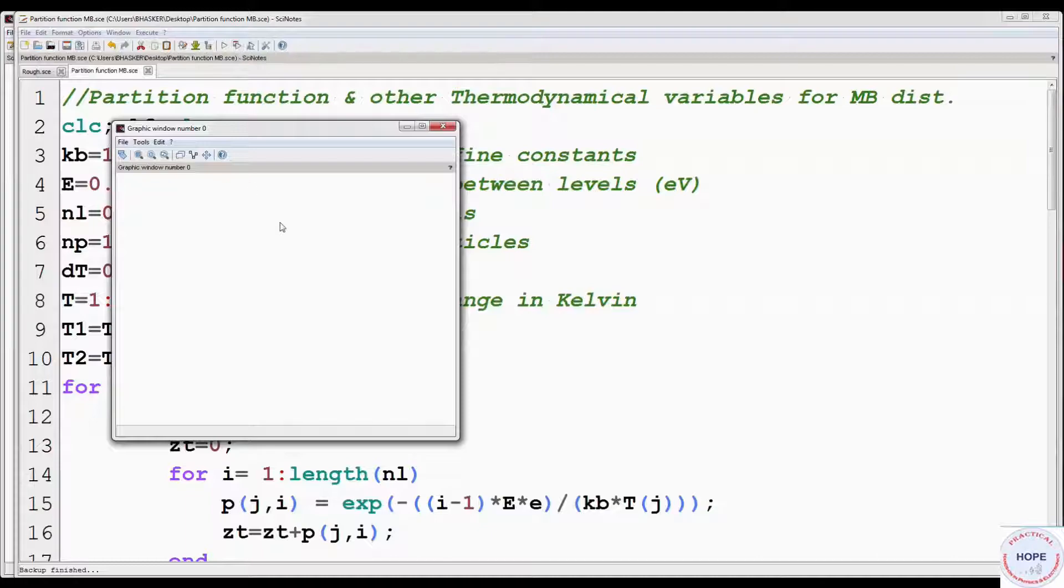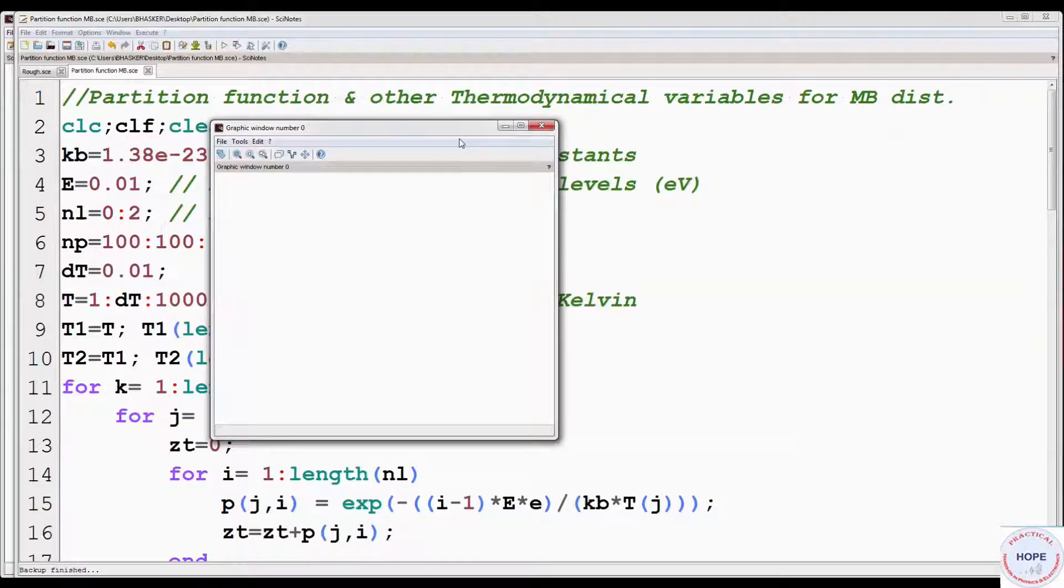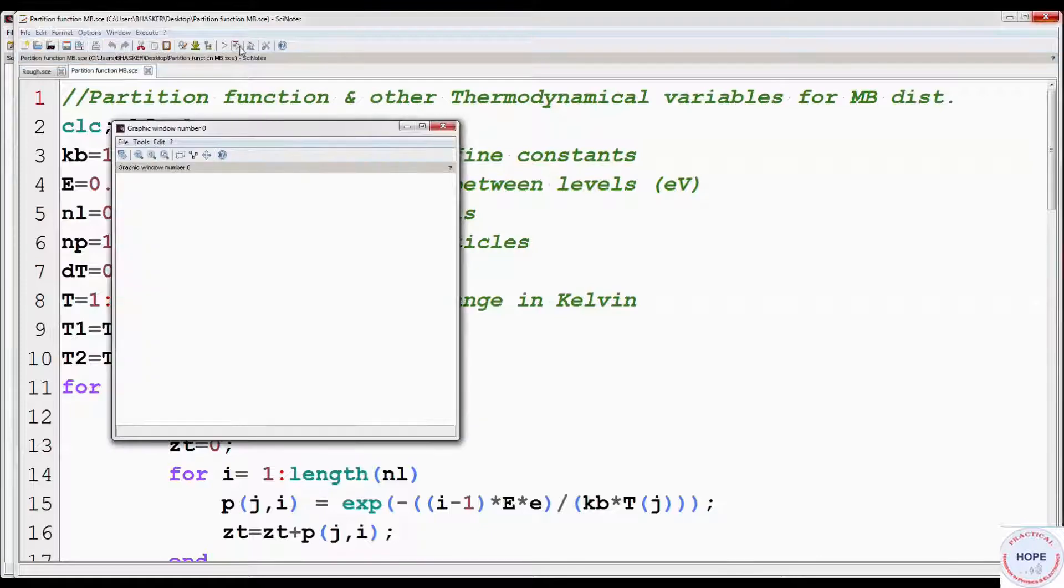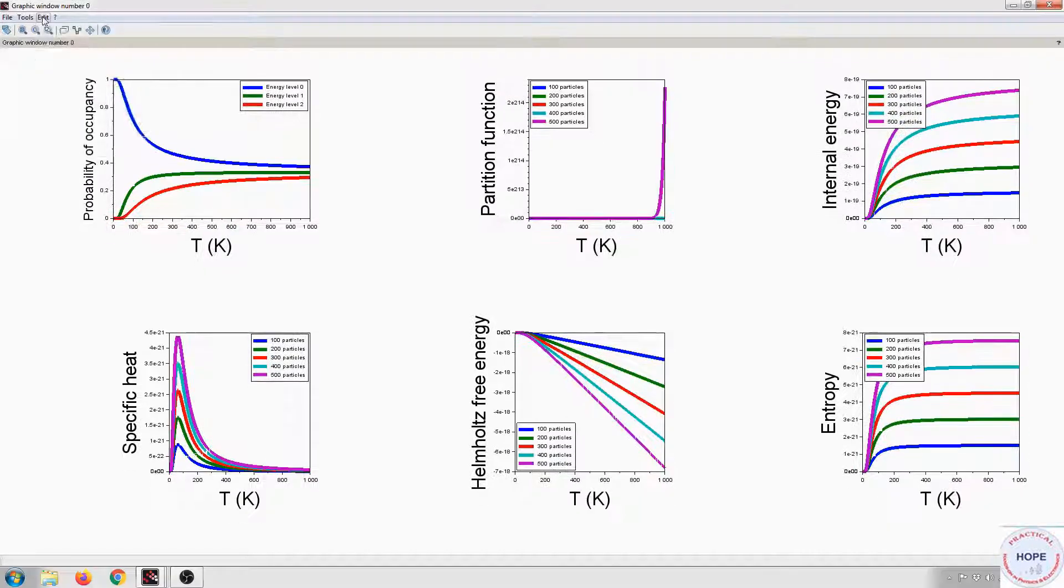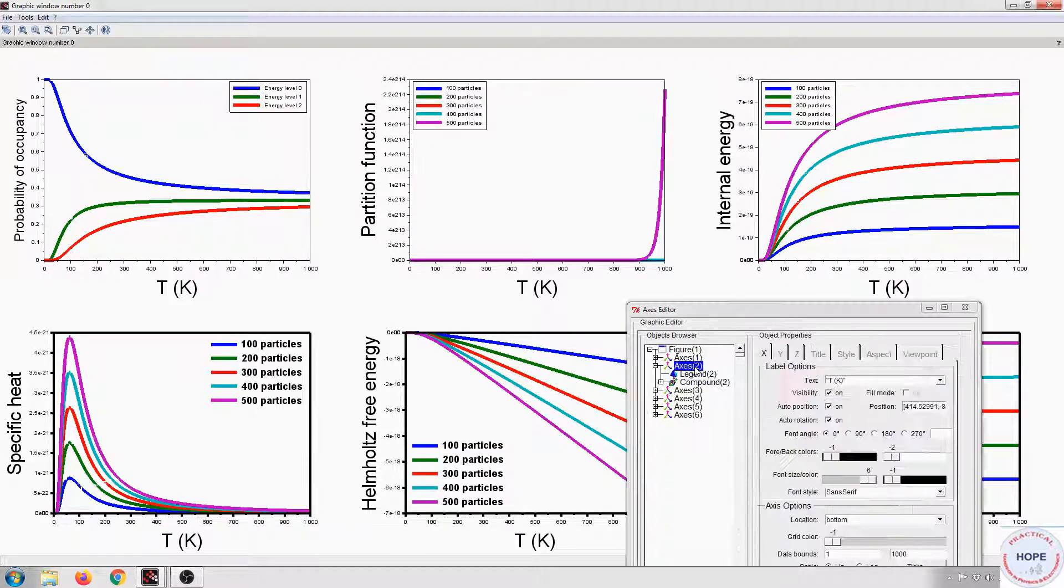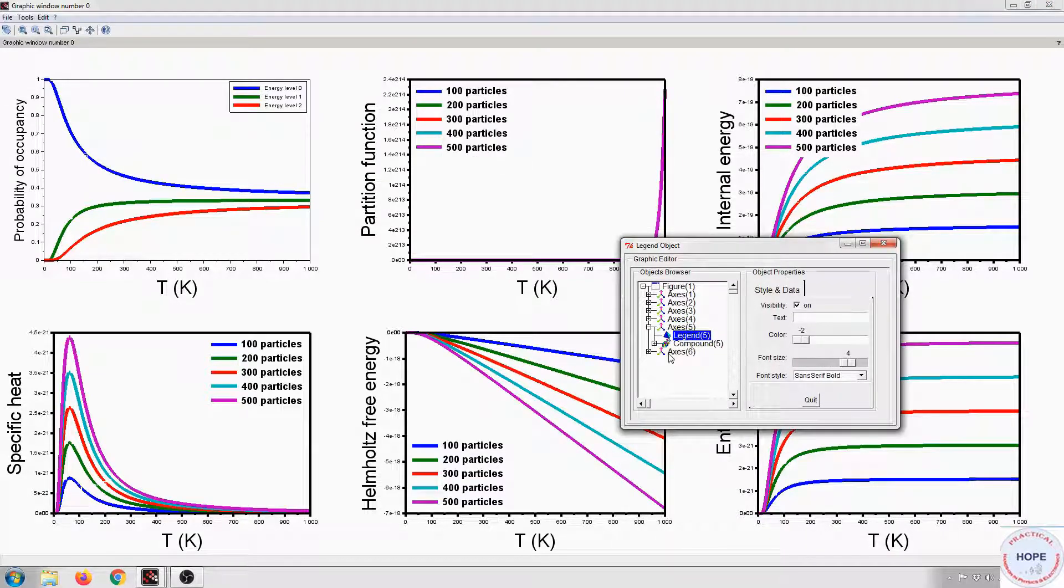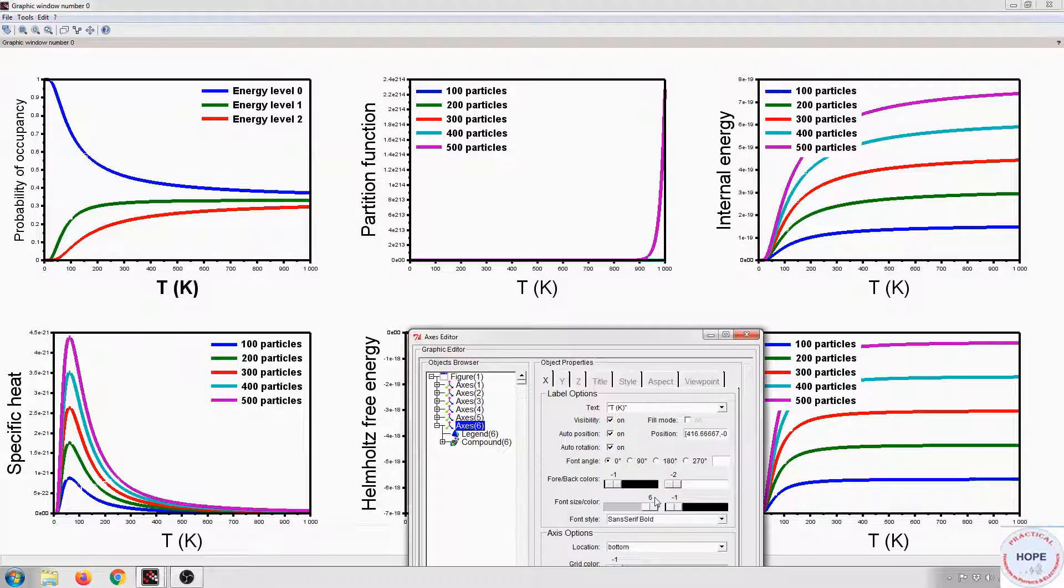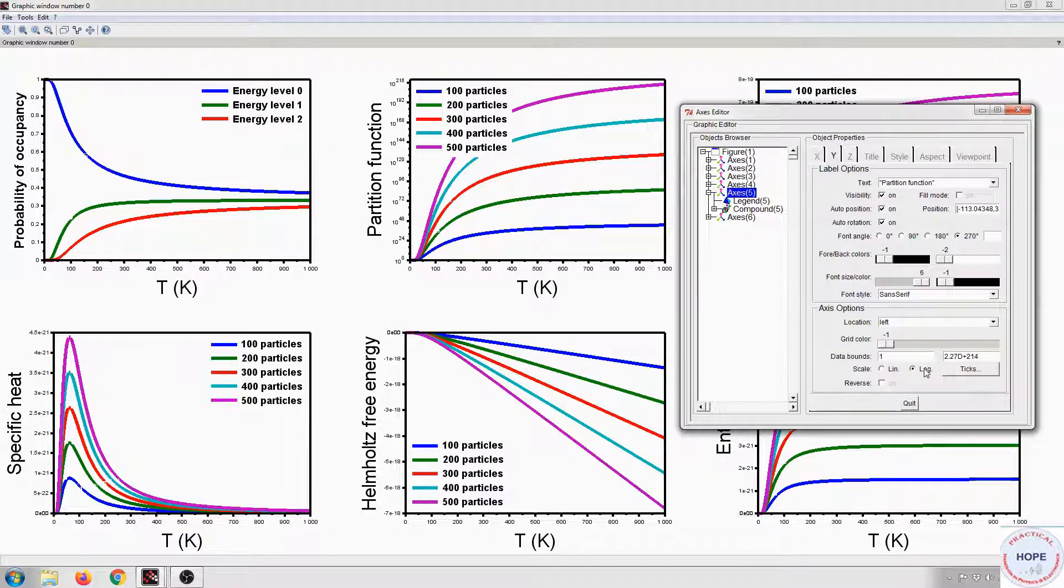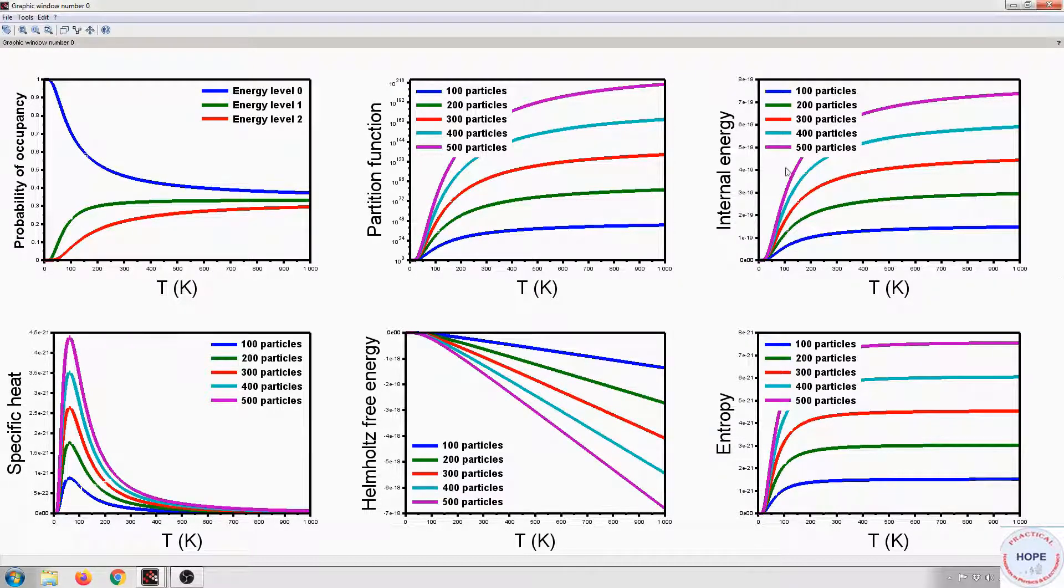Let's run it. It is taking too much time, so it's better to change the value of DT from 0.01 to 0.1 and run the program again. So these are the curves. We can increase the size of the legends. We can also increase the line width. Select axis 5 and change the scale of Y axis from linear to log so that we get a better display. So these are the final curves.